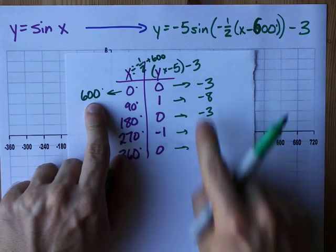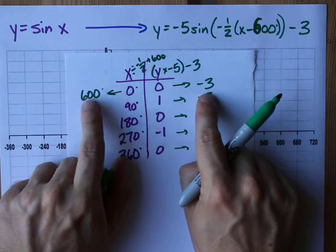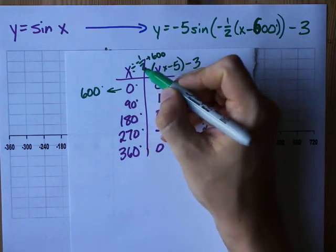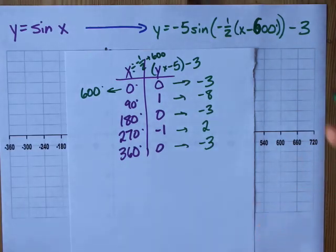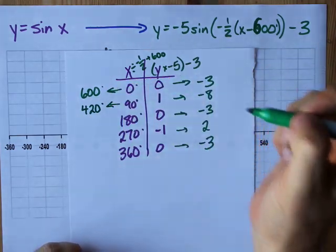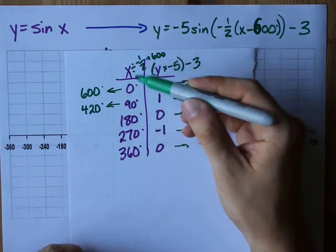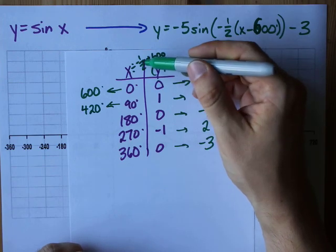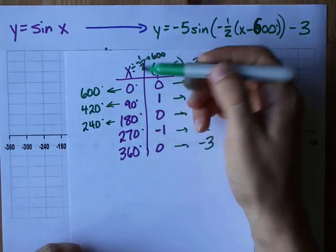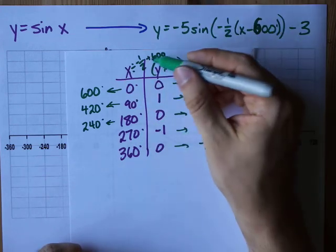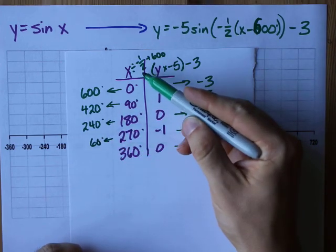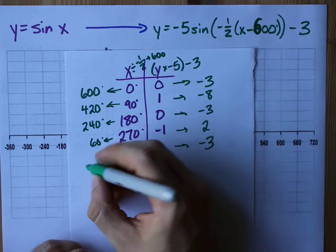This is now my new x value, and its corresponding new y value. I'm going to plot 600 comma negative three in just a second after I've done some more calculations. 90 divided by negative a half on my calculator gives me negative 180 plus 600 gives me positive 420 degrees. 180 degrees divided by a half is 360 plus, oh negative 360, plus 600 gives me 240 degrees. 270 divided by negative a half is negative 540. I'm doing this on my calculator. Add 600, I get positive 60 degrees. And 360 divided by negative a half is negative 720 plus 600 is negative 120 degrees.